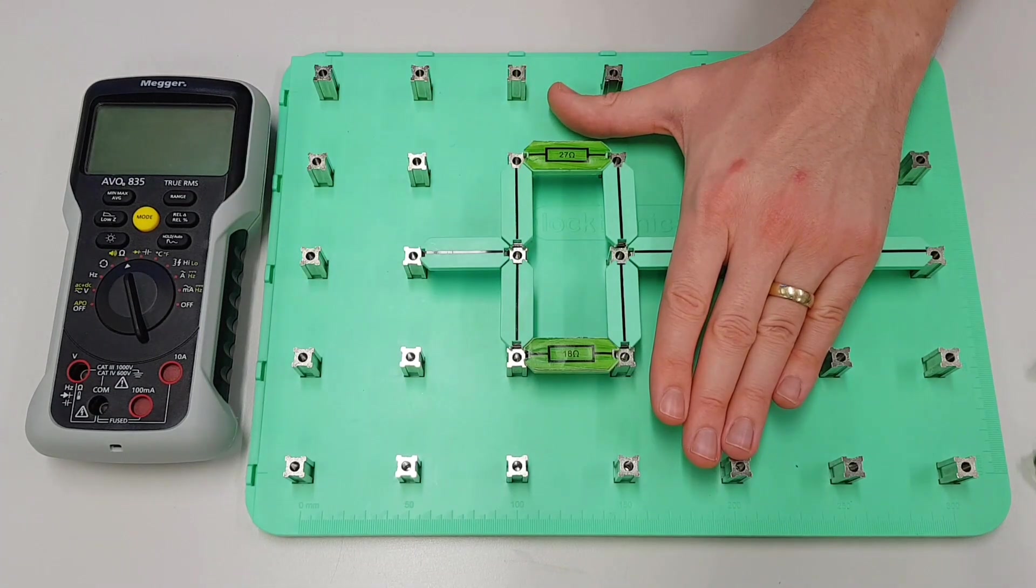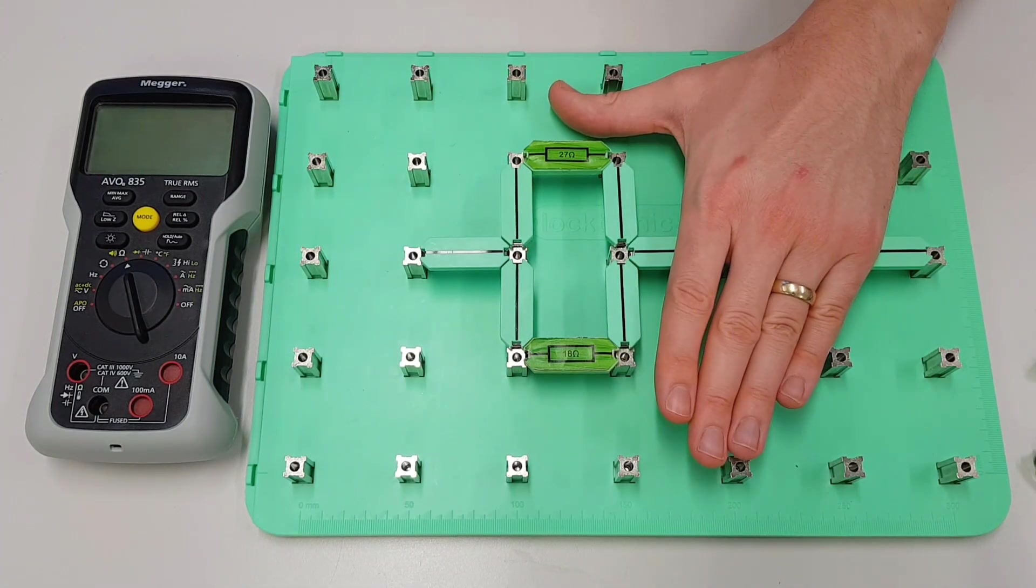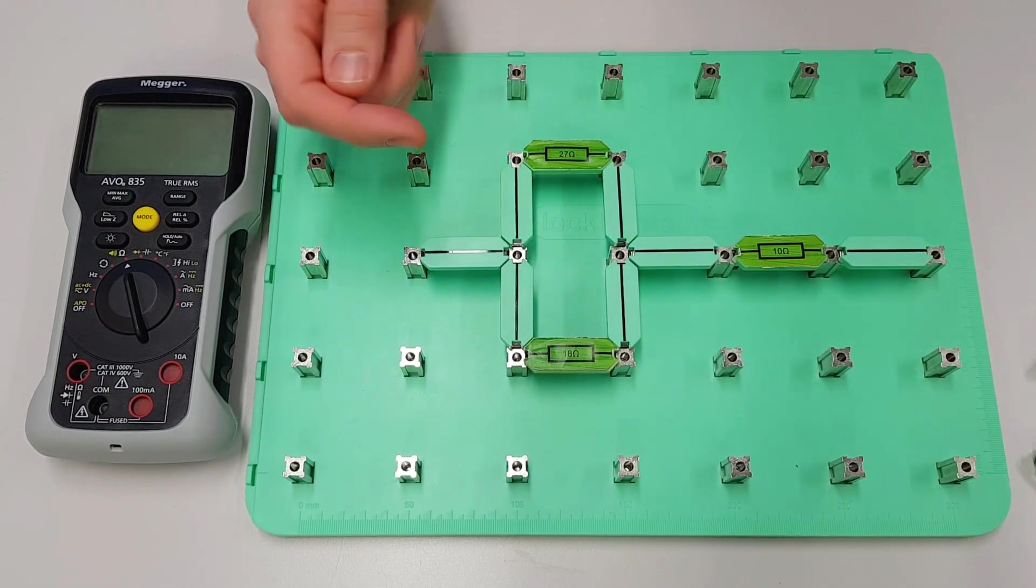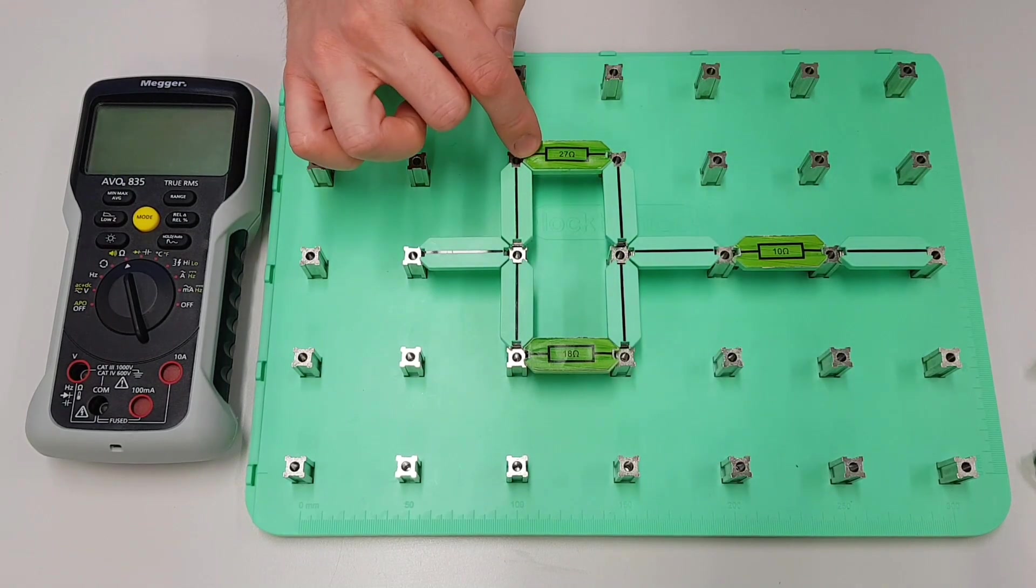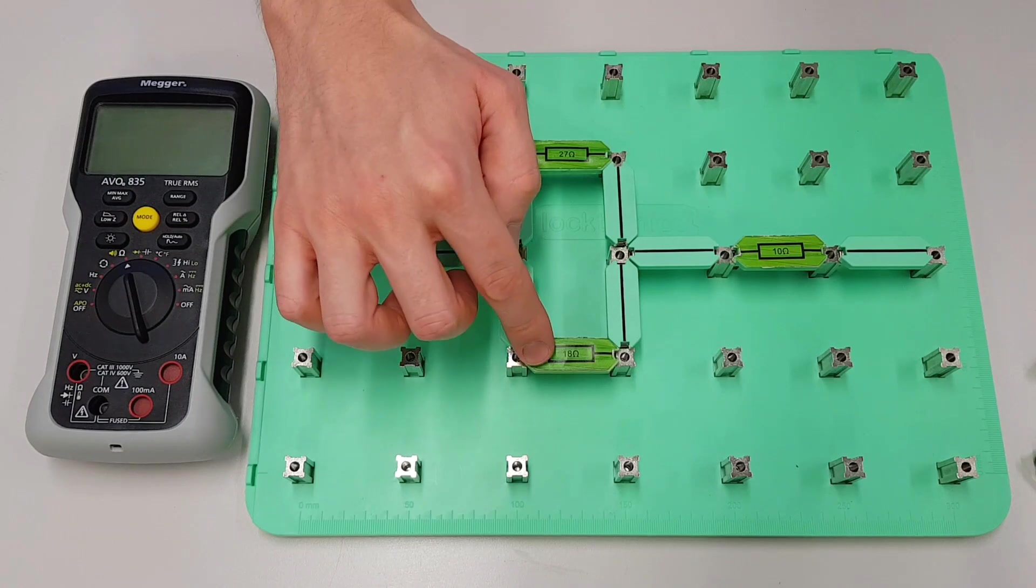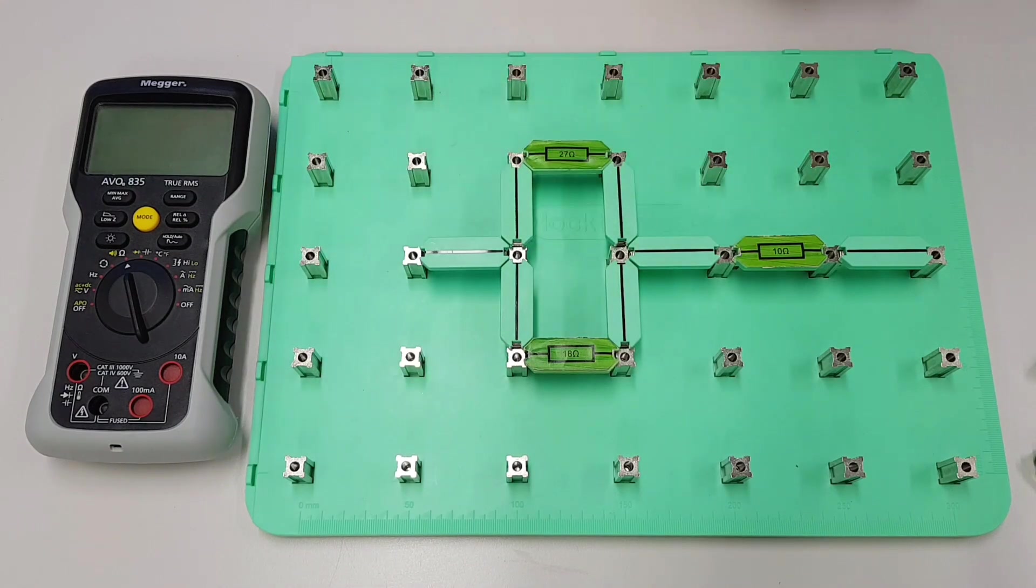Now because they're connected in parallel, we can do the calculation as we've seen in previous videos. Before we get to that calculation, let's just have a quick look at the values that we've got. So we've got a 27 ohm resistor here, an 18 ohm resistor here, and a 10 ohm resistor here.